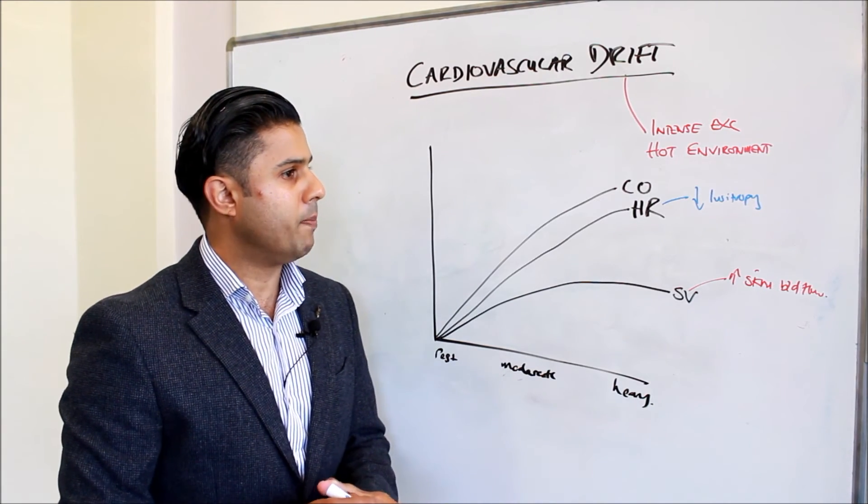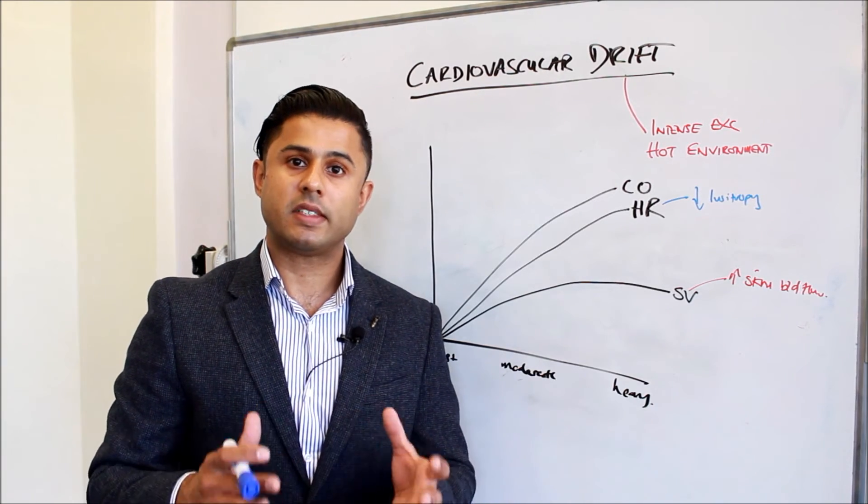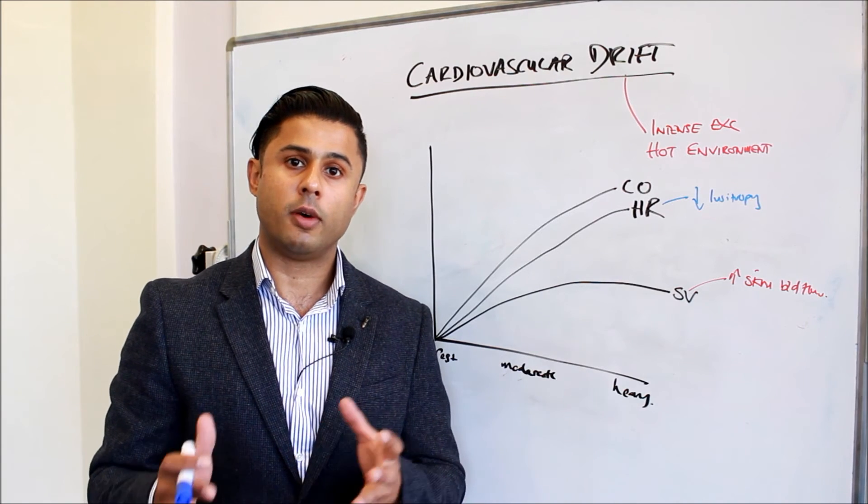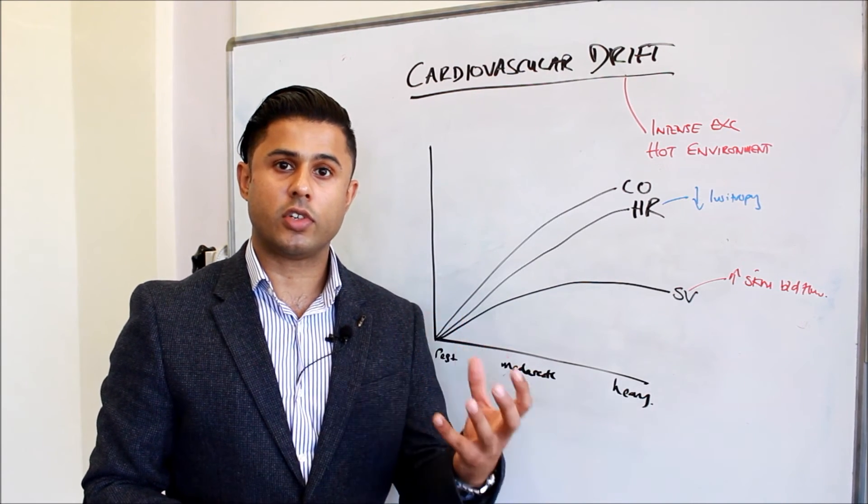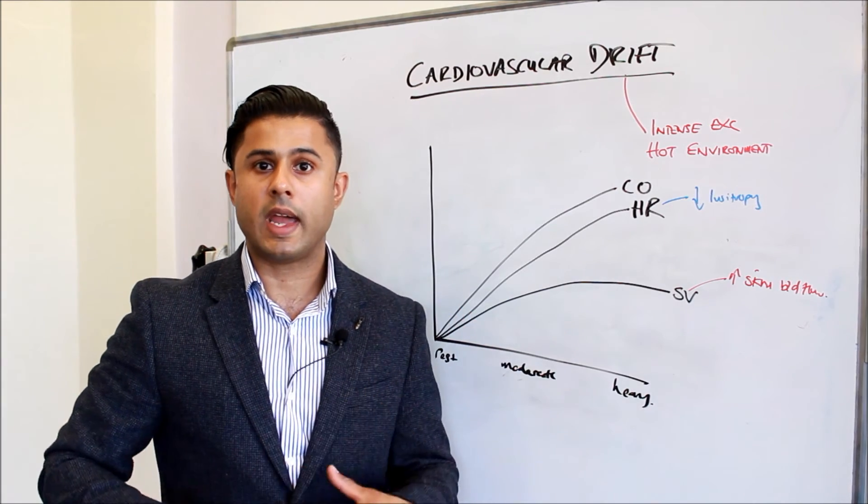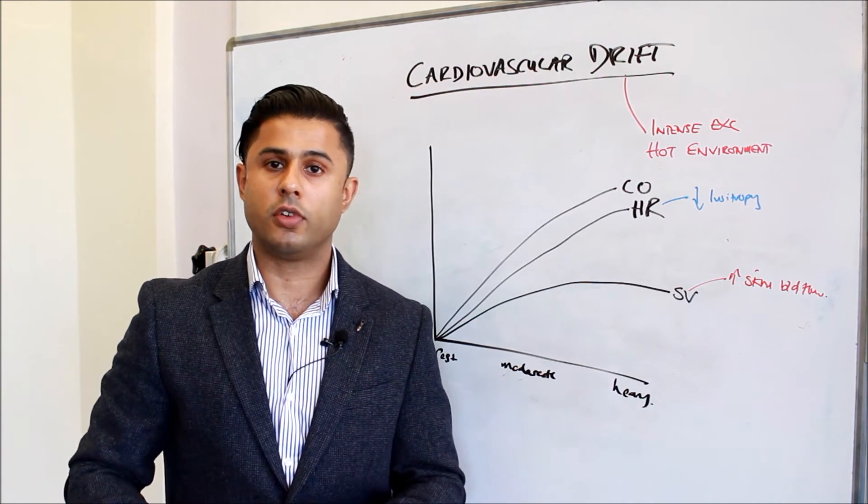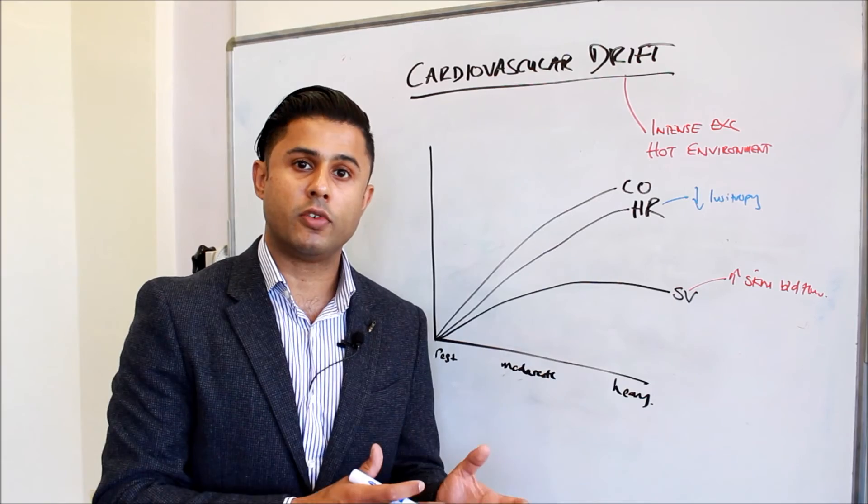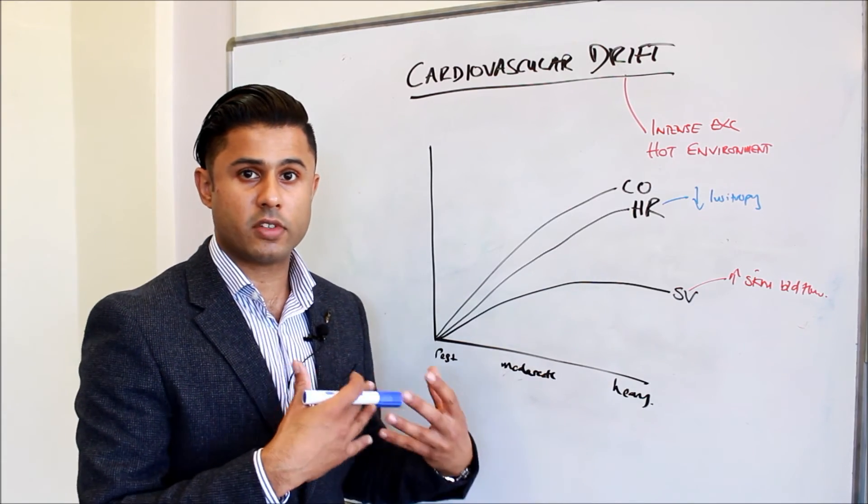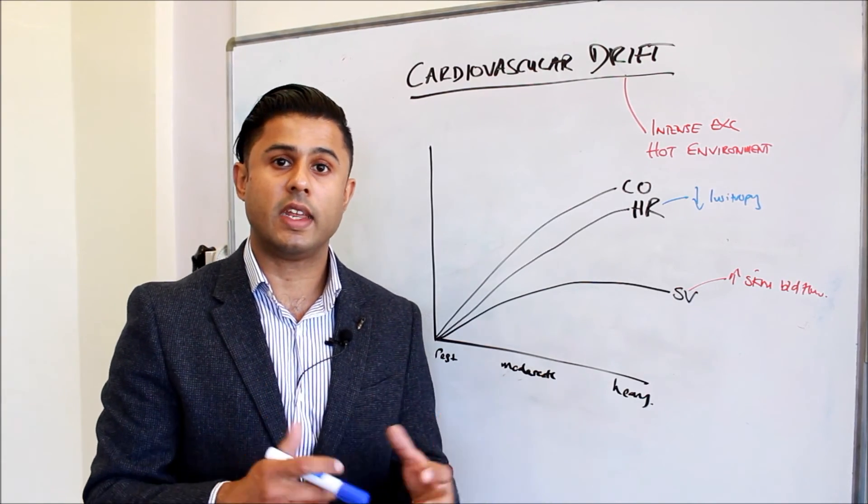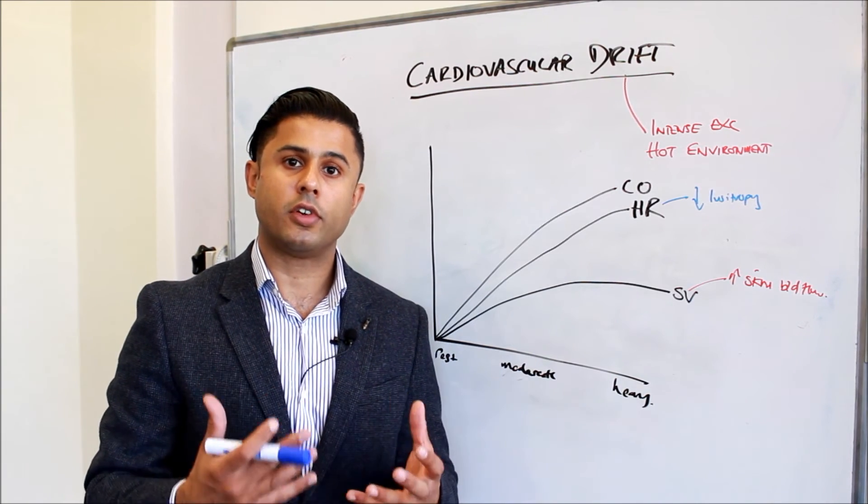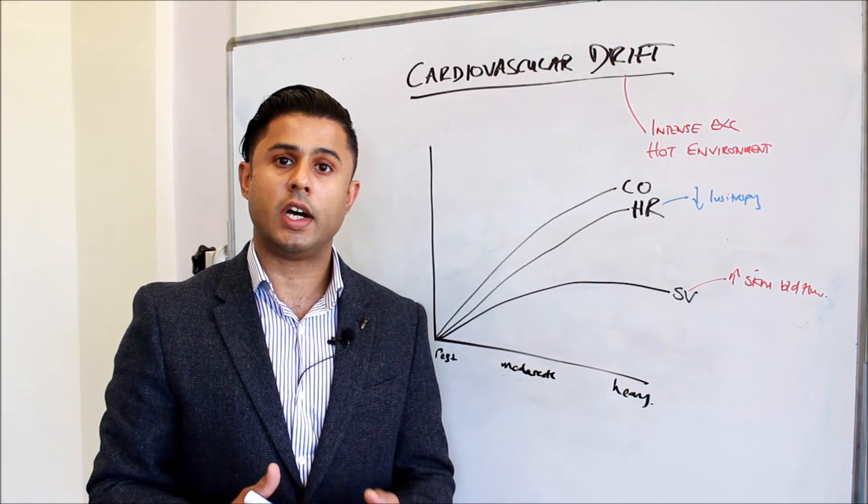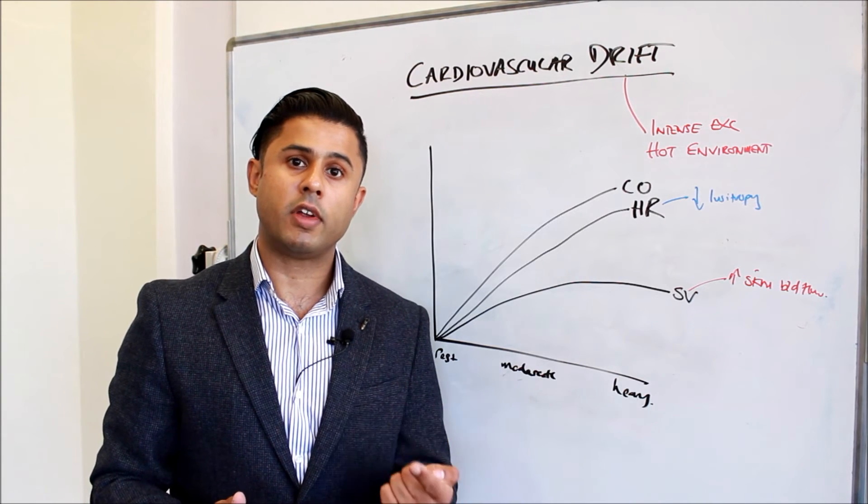We also then get mass sympathetic discharge so this is the autonomic nervous system kicking in. It causes vasoconstriction of the blood vessels where tissues do not need blood flow, so the GI system, the renal system. And there's of course vasodilation of the skeletal muscles already. The sympathetic nervous system also causes an increase in heart rate because it acts on beta receptors in the heart to increase the firing of the sinoatrial node as well as the contractility, the strength of the contraction.